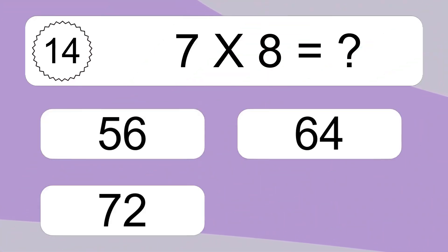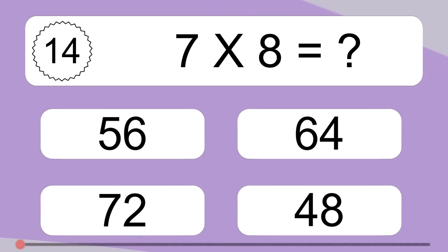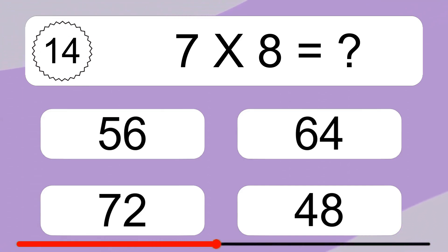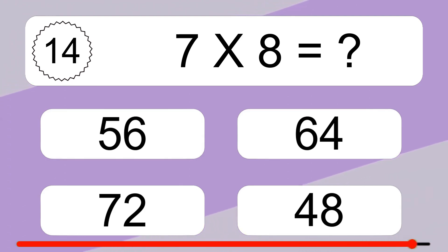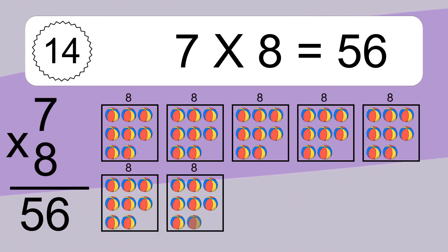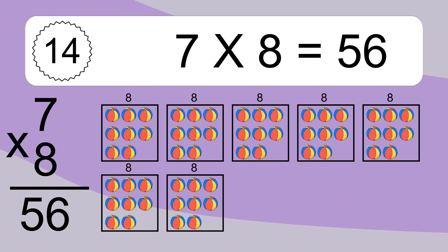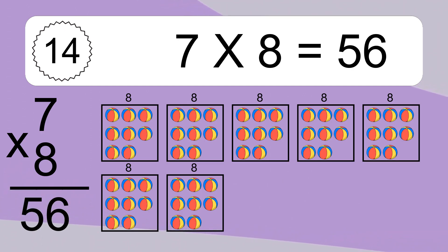7 times 8 equals what? 7 times 8 equals 56. We have 7 boxes, and each box has 8 colorful balls inside. If you count all the balls in all the boxes together, you will have 7 times 8 balls. This equals 56 balls.